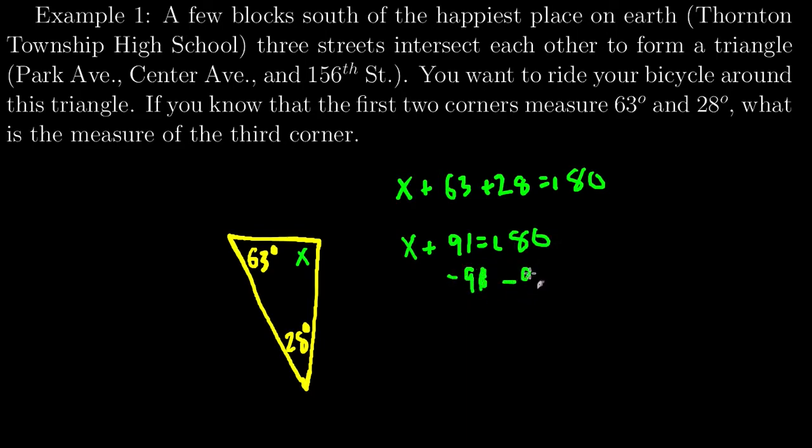So x plus 91 equals 180. So subtract 91 from both sides, 180 minus 91 lets me know that the last corner here has to measure 89 degrees.